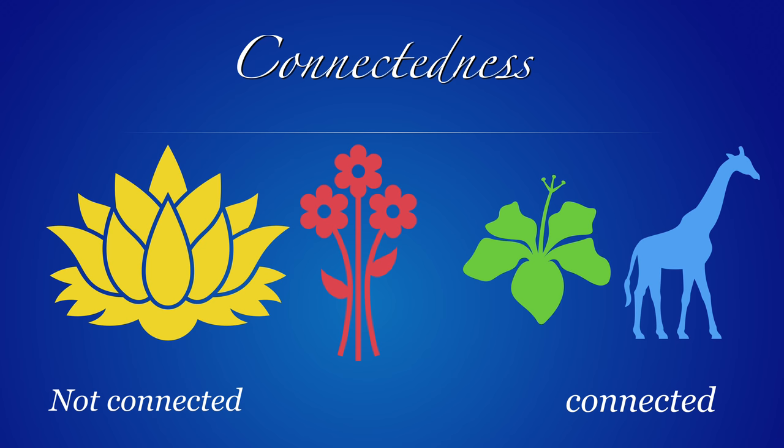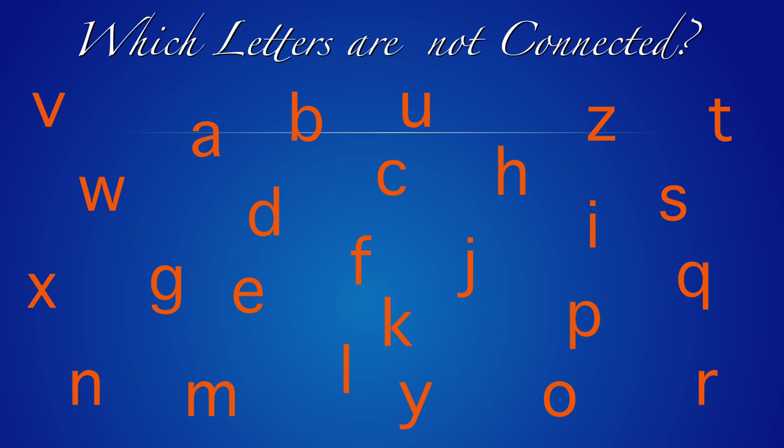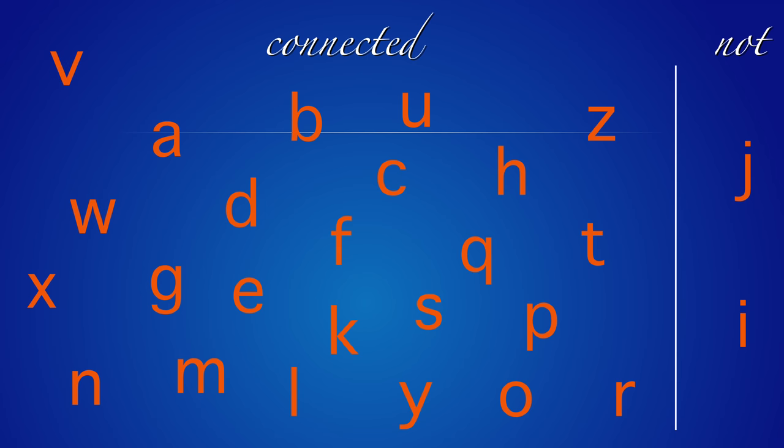So, connectedness: on the left we have two icons which are not connected — you cannot go from any point on one flower to another point without leaving the flower. And connectedness on the right-hand side: we have two icons which are connected. Let's try — which letters are not connected? There are only two: i and j.